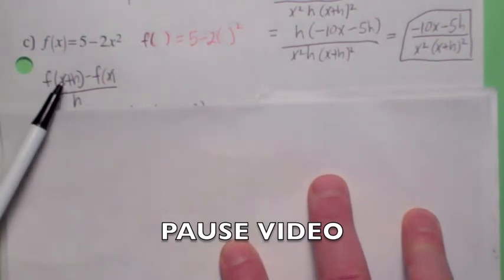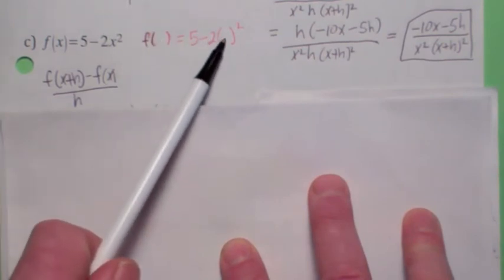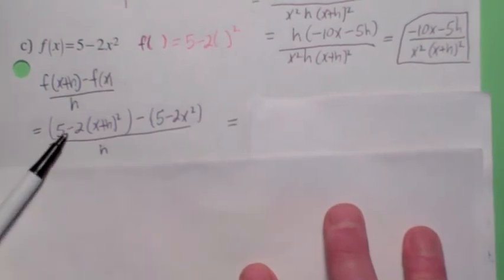Okay, now, when you start off, the key, what would f(x+h) be? It would be 5 minus 2 times the quantity (x+h) squared. So did you start off right? Did you get this for f(x+h)?